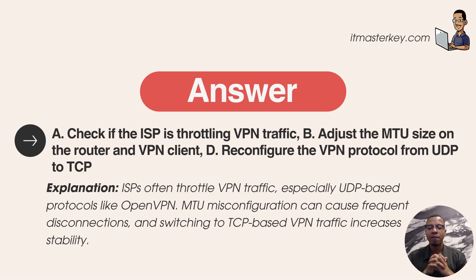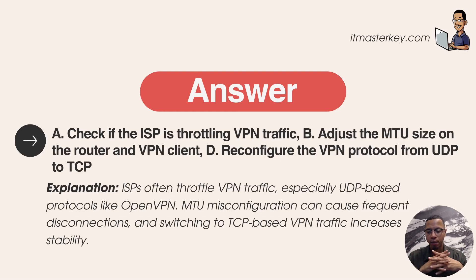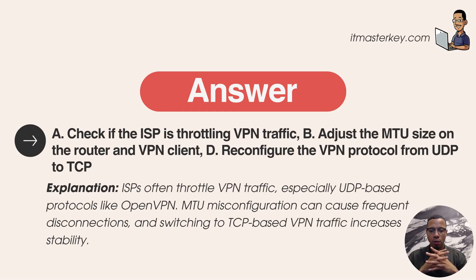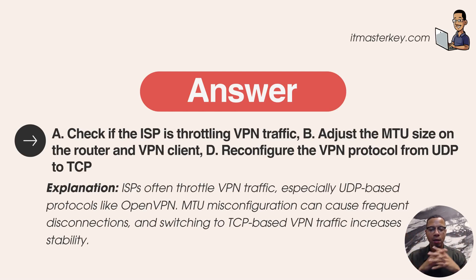Last but not least, reconfigure the VPN protocol from UDP to TCP. ISPs will throttle your bandwidth and download speeds if you're doing too much. You can also try changing your VPN from UDP to TCP because it'll make the traffic and connection more stable. It may be slower, but it'll make things a lot more stable.